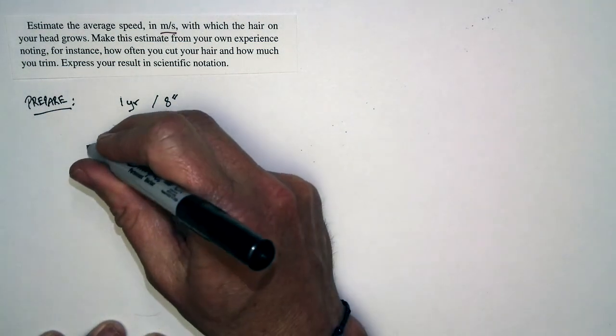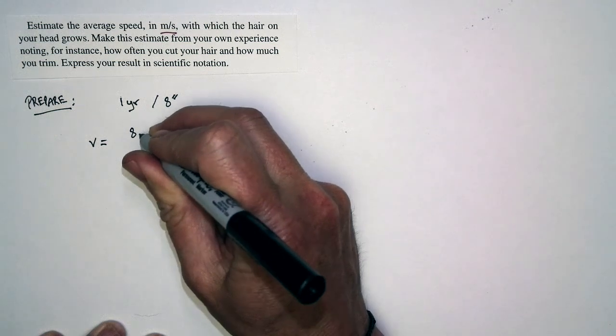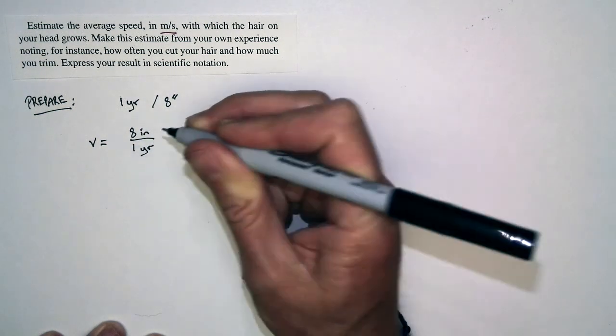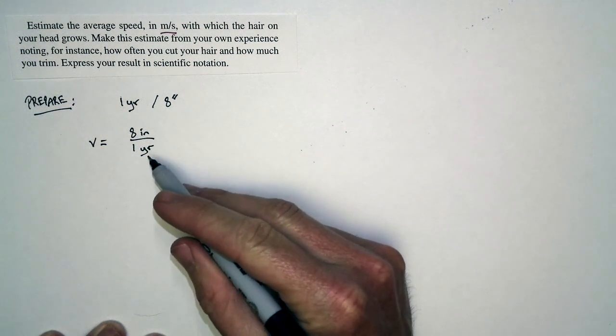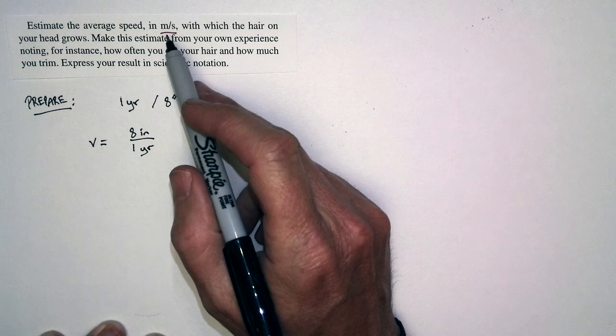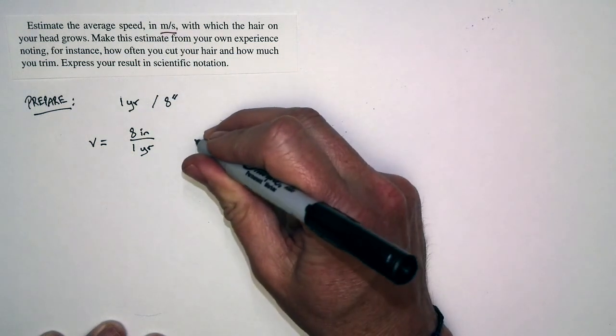So the speed of the growth of my hair is eight inches per year, but that's not the unit of speed that we want. It's a distance divided by a time, but we want to put it in meters per second. So we're going to have to do some conversions.